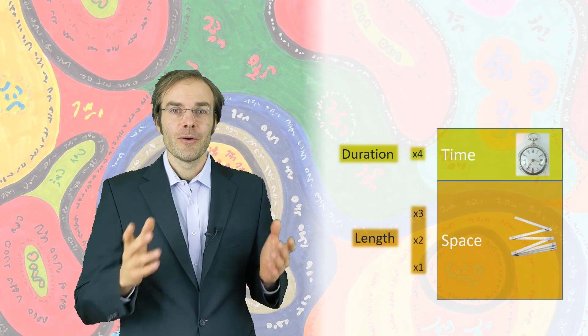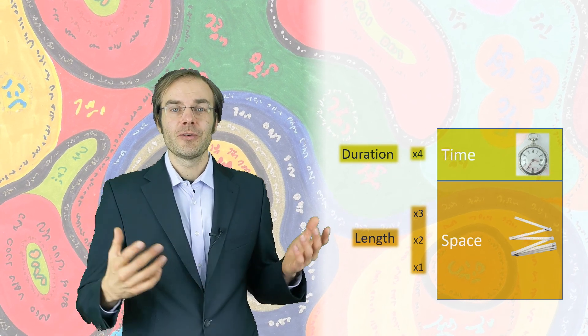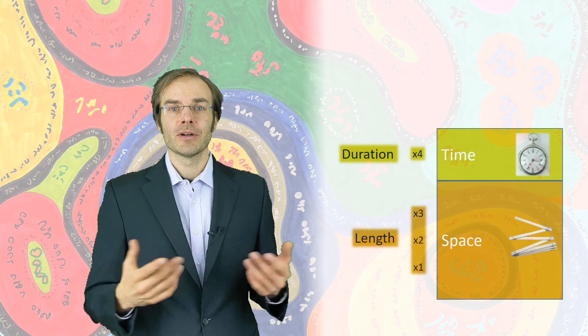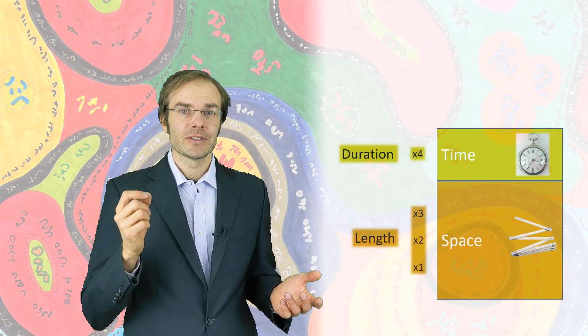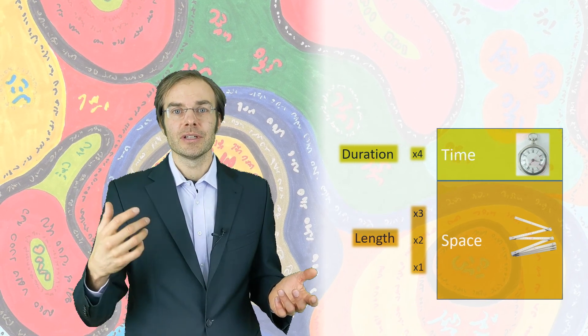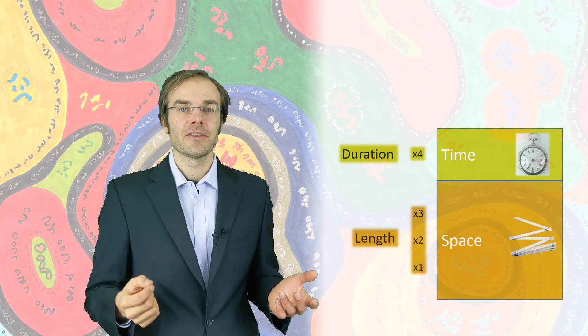Together with the spatial dimensions, time forms four-dimensional space-time or Minkowski space, which was then by Einstein developed further into Riemann space in the general theory of relativity.